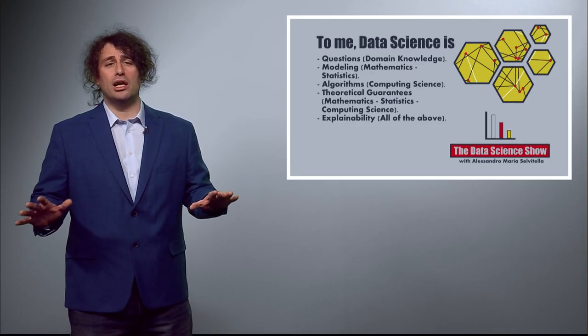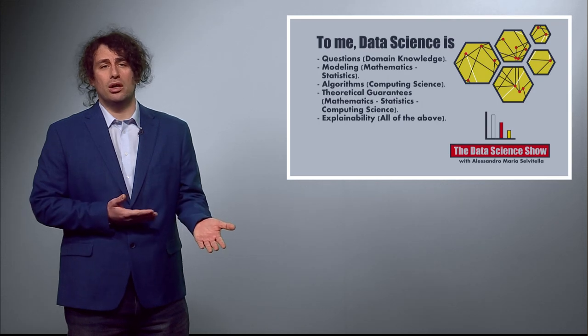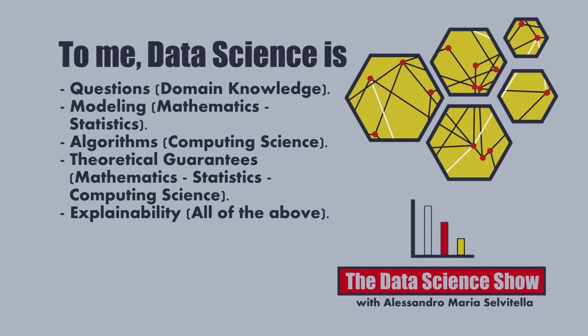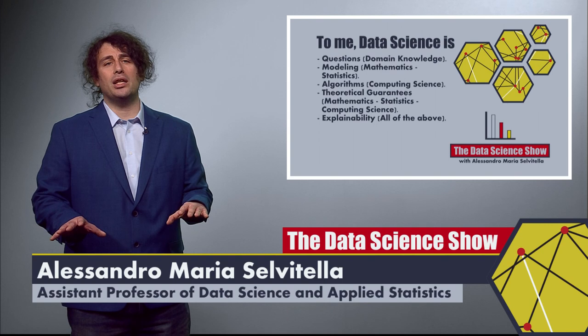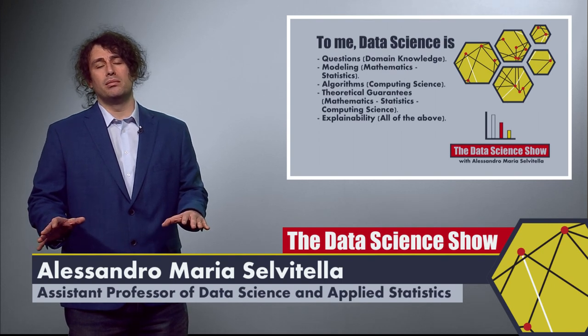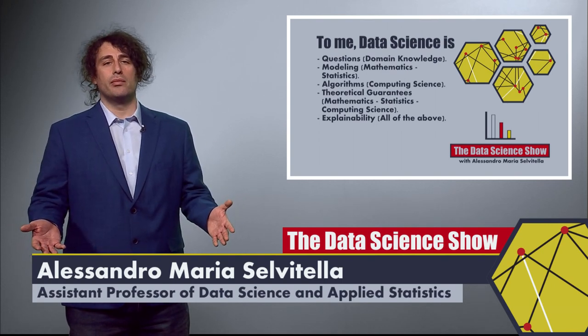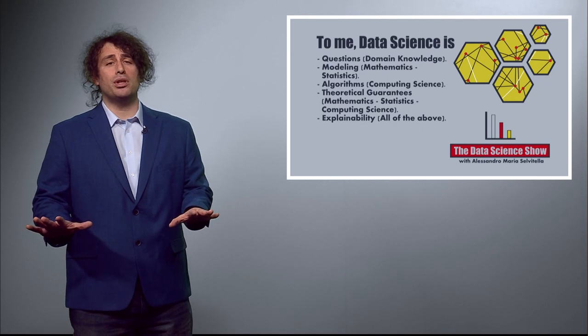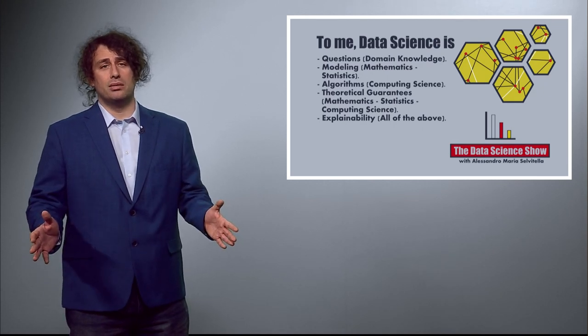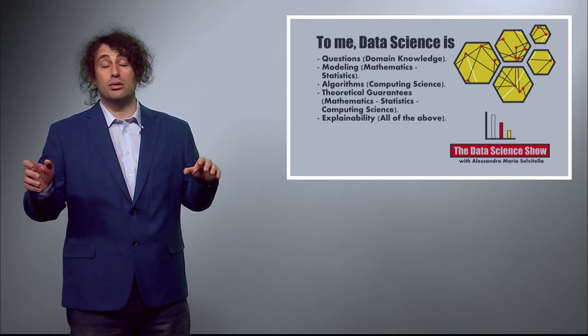Data science is about the right question to look and answer for, and this requires strong domain knowledge. Of course, data science is about building models which represent and show an understanding of the real world. This encompasses mathematics and statistics. But data science is also finding the best algorithms and implementing them, this is computing science. But we want also to support the algorithms with theoretical results, so mathematics, statistics, computing science. But we also want to give explanation to the world and to the process we use to understand the world and make it better.